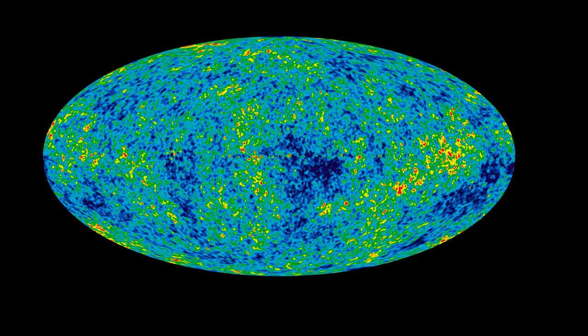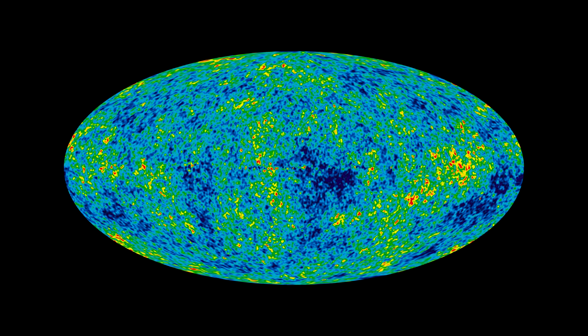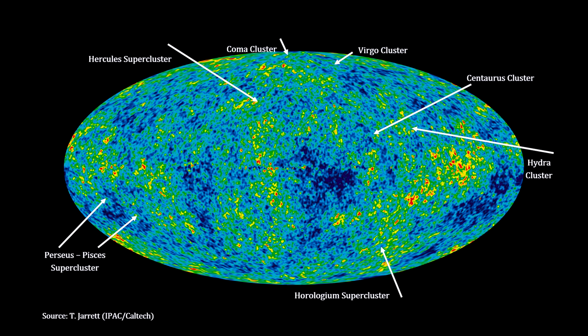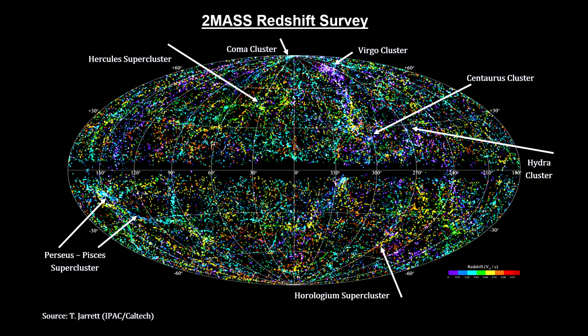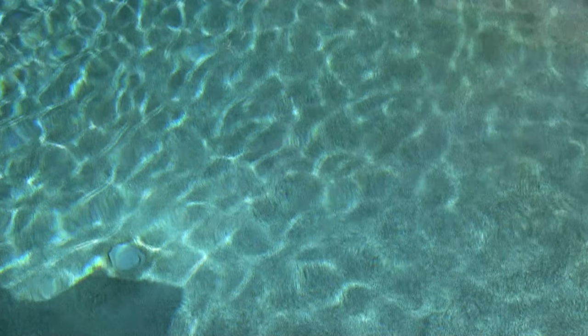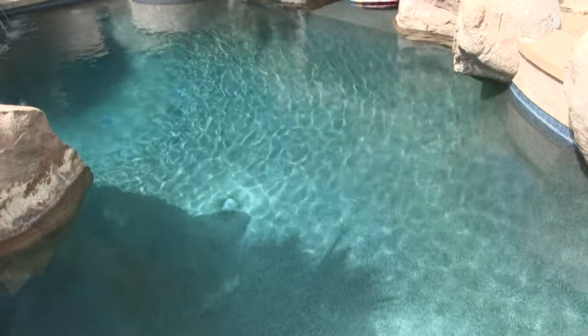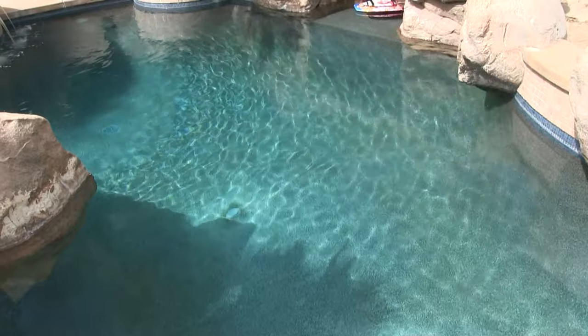Just how the universe evolved from small-scale matter deviations at the time of decoupling to filaments of superclusters and vast voids can be explained by a physical process called caustics. Originally developed to explain light behavior, it works just as well for protons and dark matter. I see this phenomenon in my own backyard — the lines at the bottom of a swimming pool are examples of caustics caused by small waves on the surface of the water.